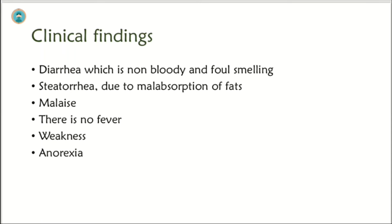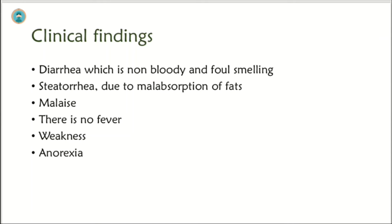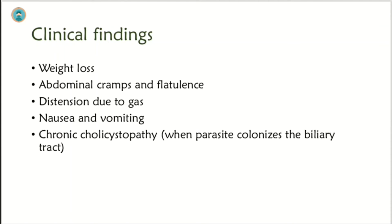Clinical findings in Giardia: Diarrhea which is non-bloody and foul-smelling, due to malabsorption of fats. There is no fever. Weakness, anorexia, weight loss, abdominal cramps and flatulence, distension due to gas, nausea and vomiting. Chronic cholecystopathy occurs when the parasite colonizes the biliary tract. Giardia lamblia attacks the jejunum, and in the second part of the jejunum the biliary duct opens, so when the parasite enters from the jejunum into the biliary tract through the bile duct opening, it can cause cholecystopathy.